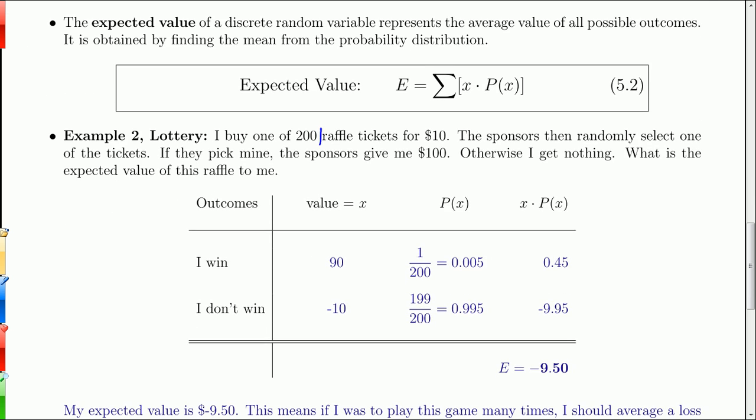For example, suppose I buy a raffle ticket. There are 200 being sold. I buy one. It costs me $10. The sponsors of this raffle then randomly select one of the tickets. If they pick mine, I get $100. But if they don't pick mine, I get nothing. What is the expected value of this raffle to me? I have my outcomes: win or don't win. But then I have the value of those outcomes. If I win, it's a $90 value, because they give me $100, but I spent $10.